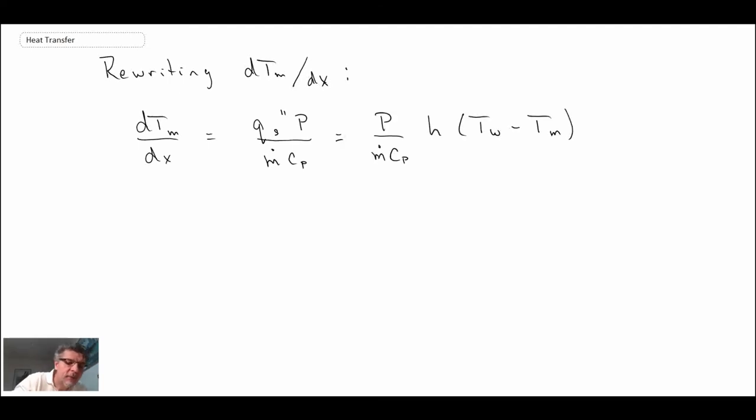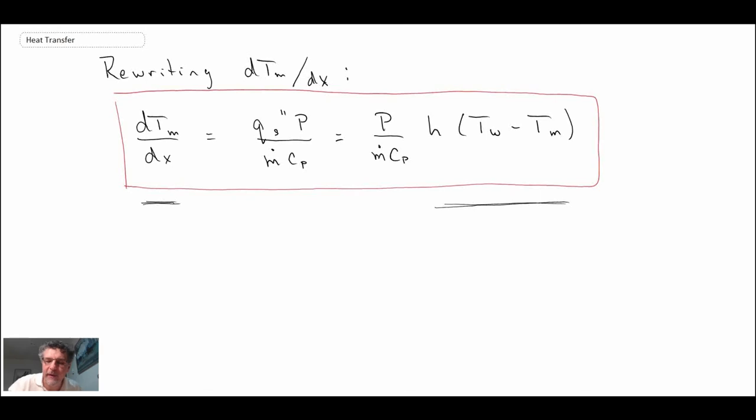This provides us with a differential equation where we have the slope, or the gradient of the bulk temperature with position on the left, and on the right we have an expression that contains the bulk or mean temperature, and also embedded is the convective heat transfer coefficient. Now if we're outside of the entry region of the pipe—in the region we call fully developed flow—